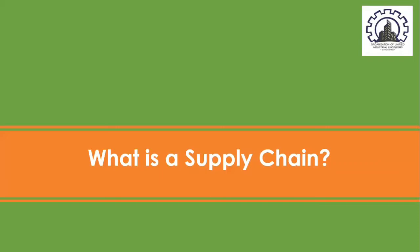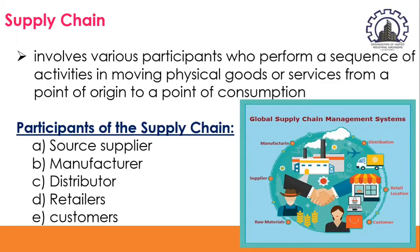So what is meant by supply chain? A supply chain involves various participants who perform a sequence of activities in moving physical goods or services from a point of origin to a point of consumption. These participants are in the following order: from upstream — toward the origin — to downstream — toward the ultimate consumer.